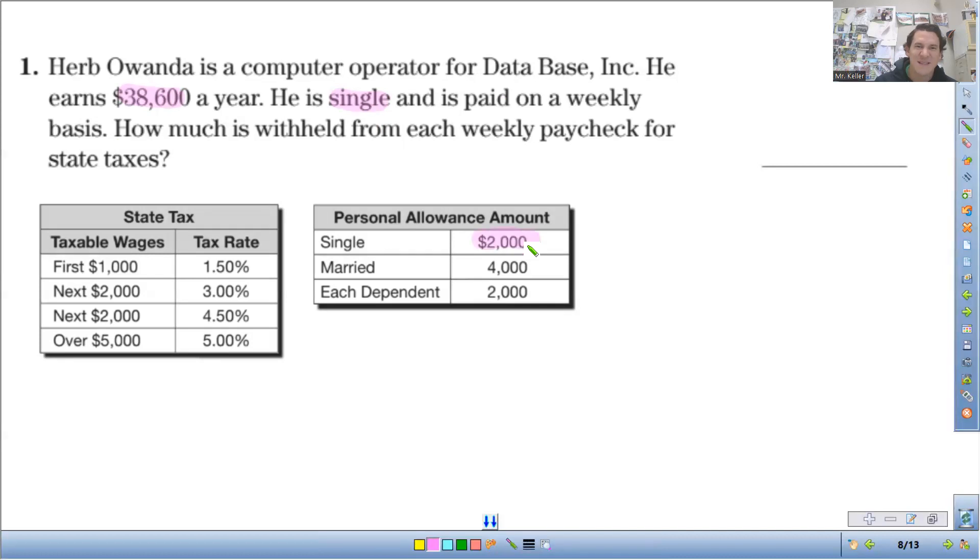So he's single, so he only has the $2,000 exemption. So his taxable income, first thing we need to do, calculate out the taxable income. Take your $38,000 and subtract the total exemptions. So $38,000 minus $2,000 equals $36,000 of taxable income.